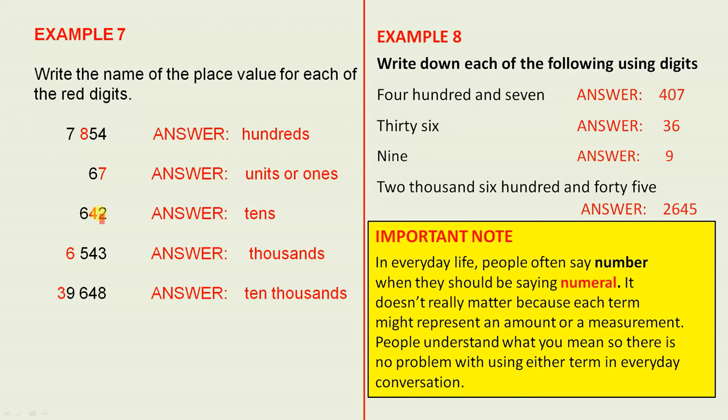The 4, units, tens, so it's in the tens column. The 6, units, tens, hundreds, thousands. And the last one, the 3. Units, tens, hundreds, thousands, 10,000.